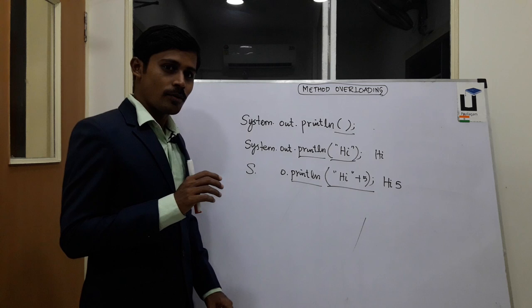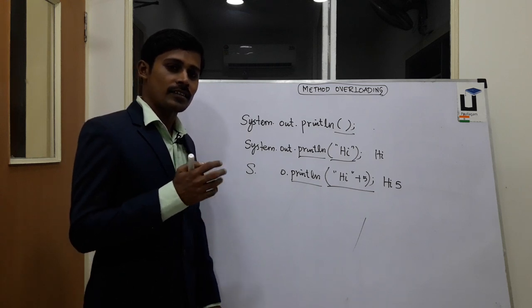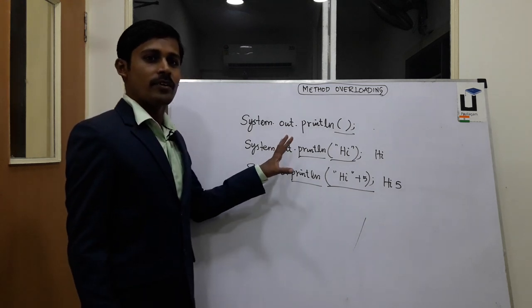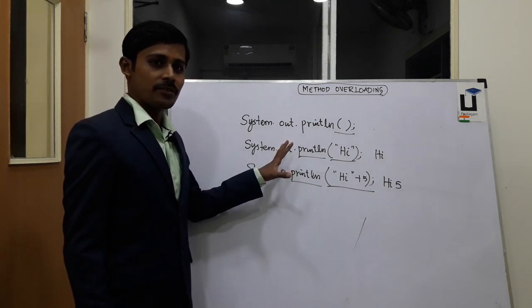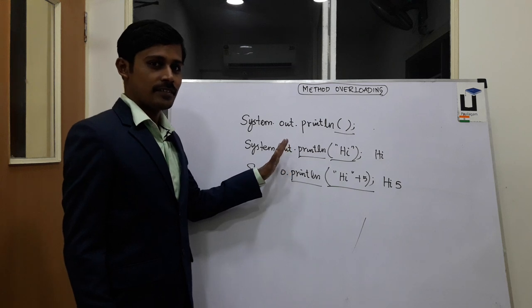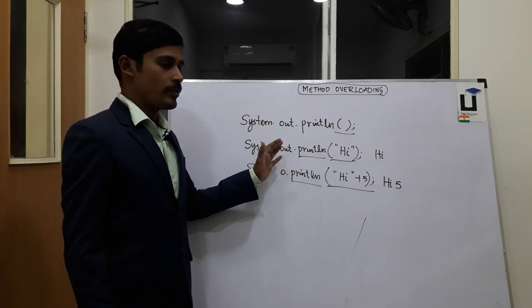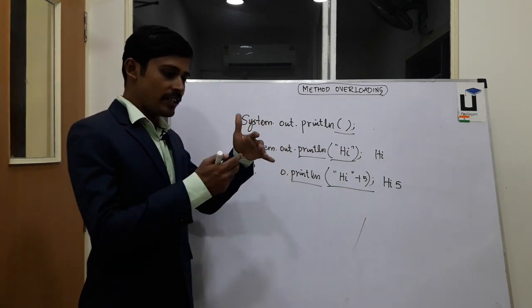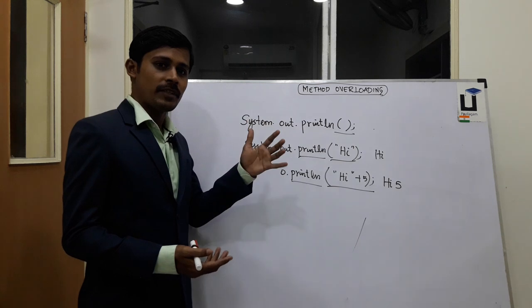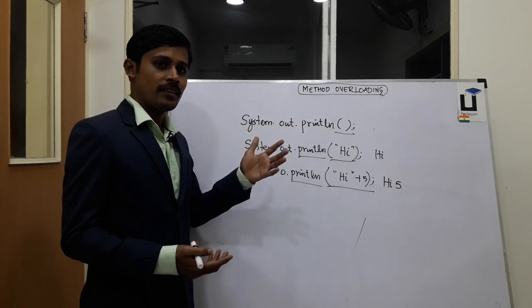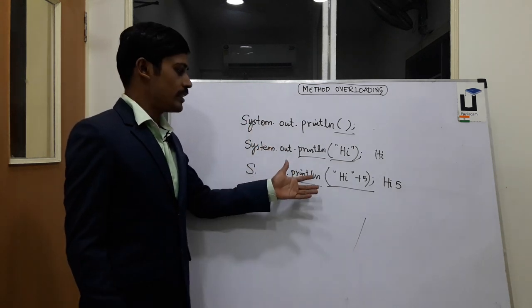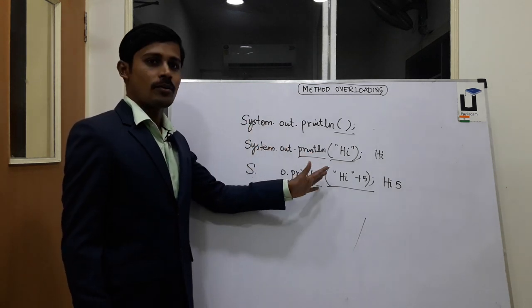Then we know that we use the concept of method overloading. If you give an example of method overloading, you can explain the same program. We use system.out.print for method overloading.